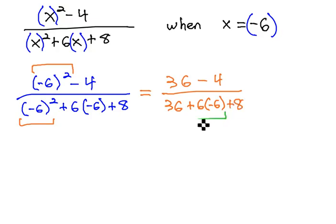Next, order of operations asks us to do the multiplication. We now have 36 minus 4 over 36 minus 36 plus 8.